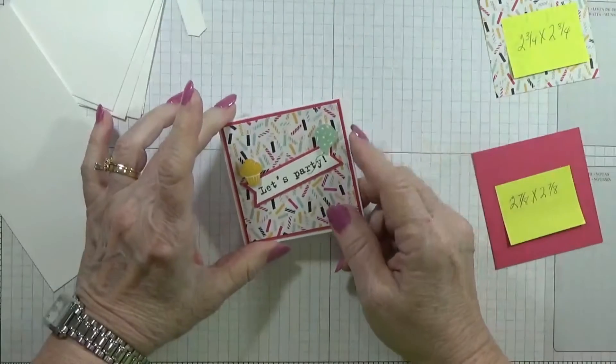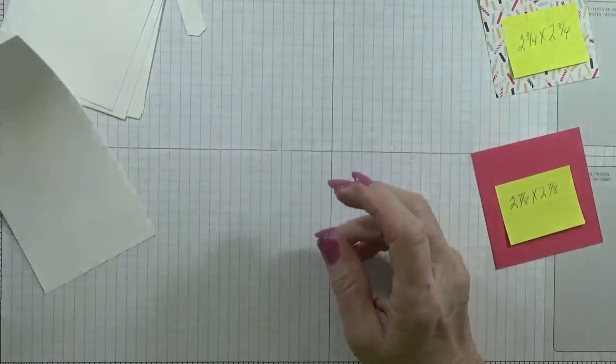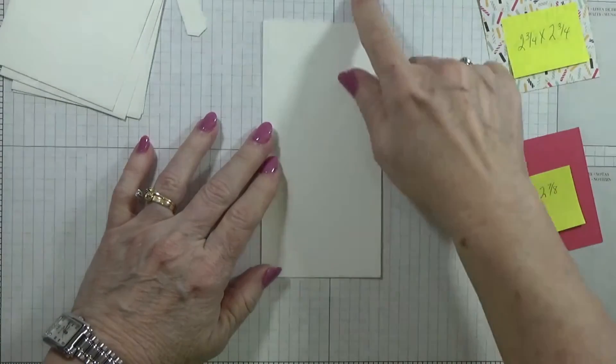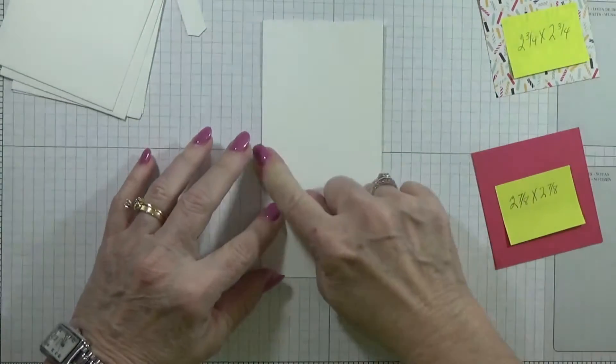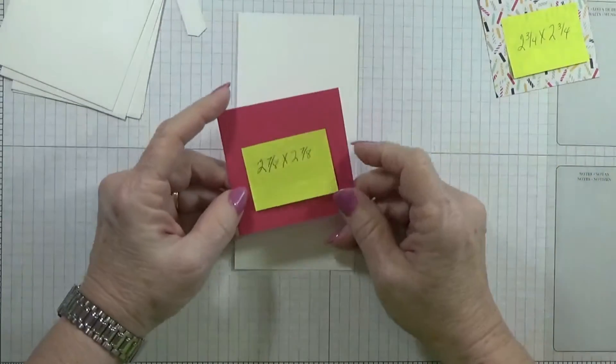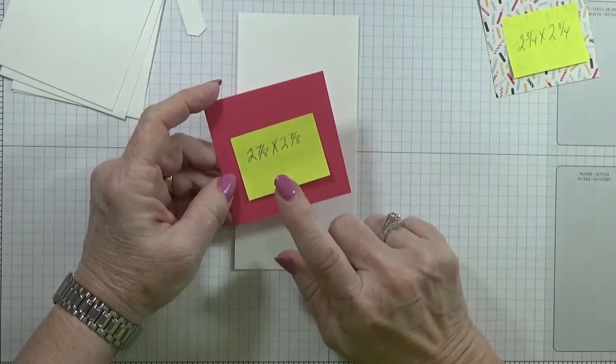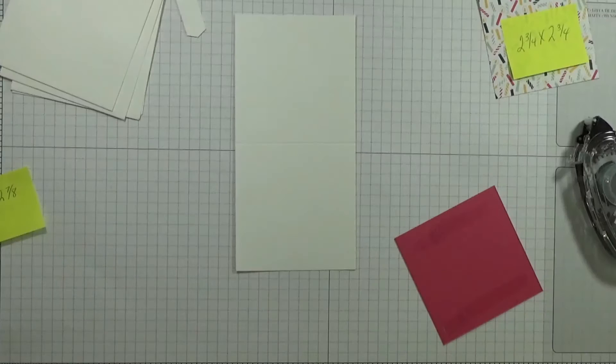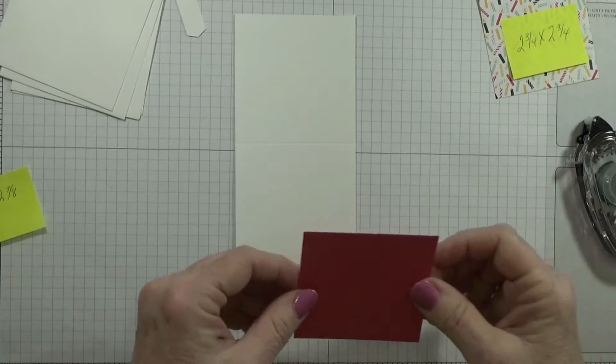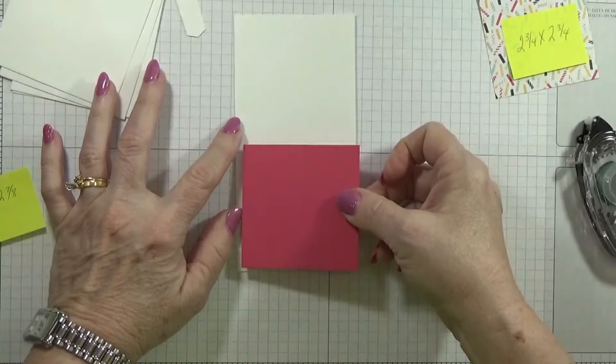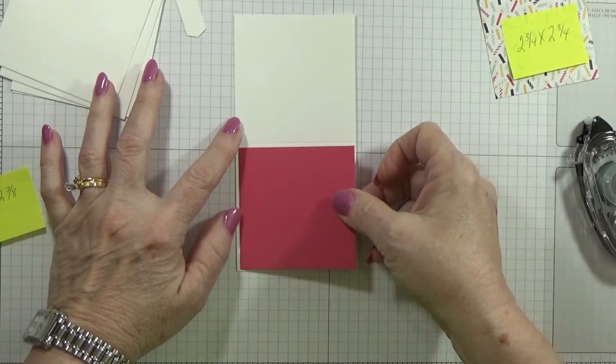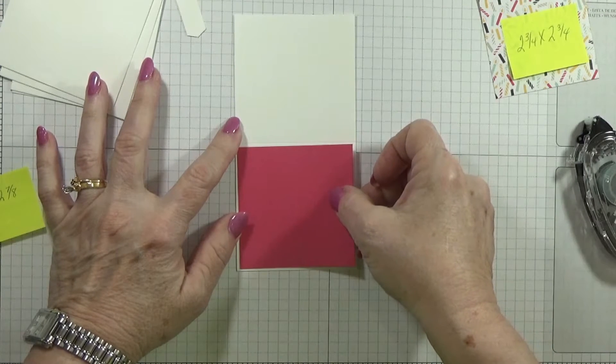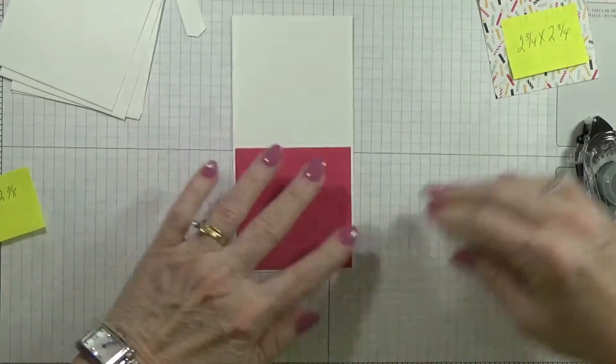Let's get started with this little card here. I have a piece of Whisper White cut at 3 by 6 and scored at 3. Then I have a piece of Melon Mambo which is 2 and 7/8 by 2 and 7/8. This Melon Mambo, I just wanted a small border around here, so we're going to put this down.